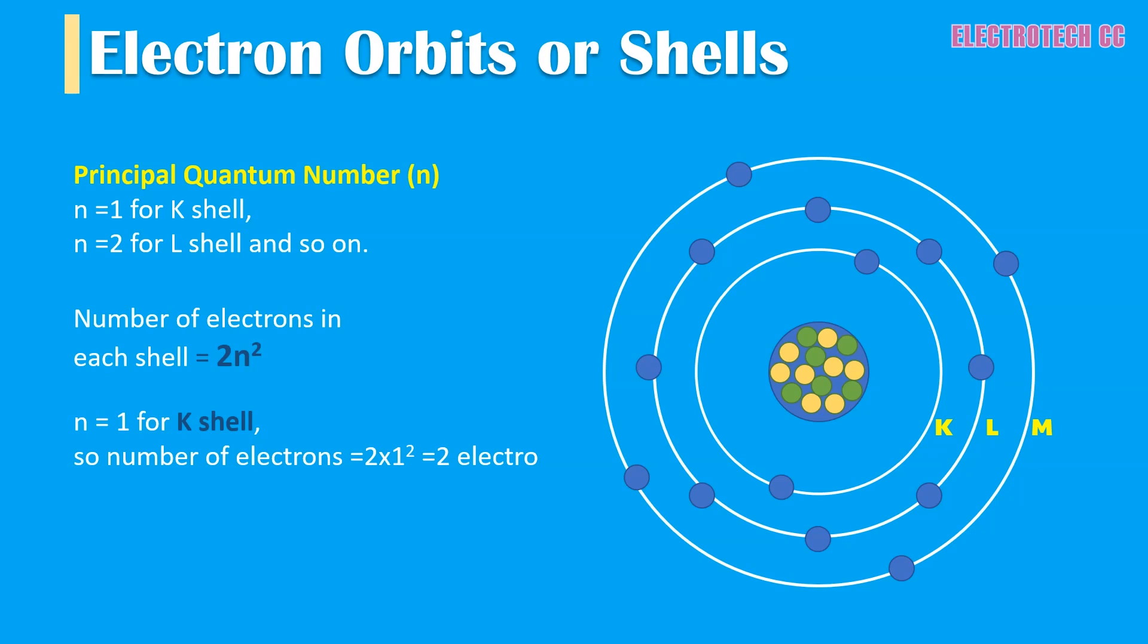For example, K shell with n equals 1 can have 2 electrons. Similarly, L shell with n equals 2 has a maximum of 2 times 2² equals 8 electrons. In M shell, n equals 3, so maximum number of electrons equals 2 times 3² equals 18 electrons in M shell. Similarly, N shell can have 32 electrons.